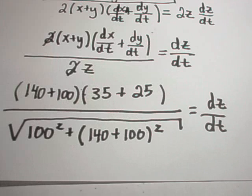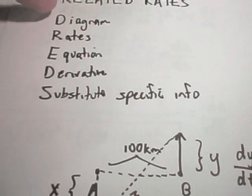And that's going to be the rate of change, the rate at which the distance between the two ships is changing, at 4 p.m. So, again, I think this little mnemonic device, this DREDS device, is kind of a good procedure to follow.